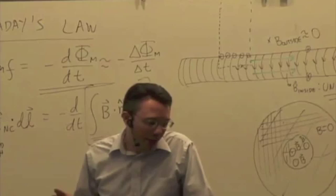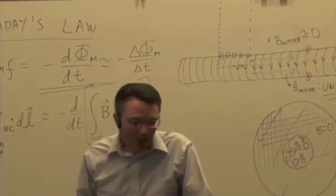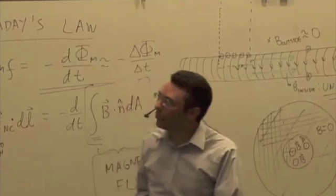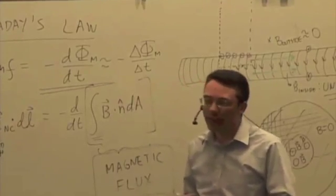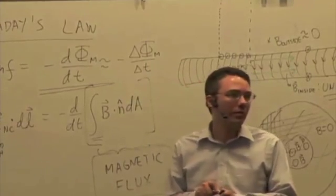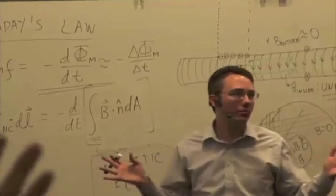So that difference is 4 times 10 to the minus 4 divided by 0.1 is 4 times 10 to the minus 3 volts. So you get 4 millivolts induced in the outer ring. Pretty straightforward questions here.